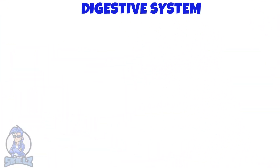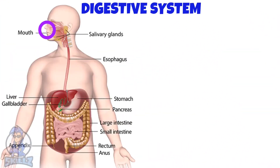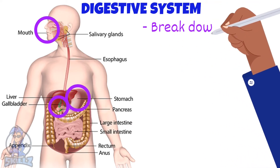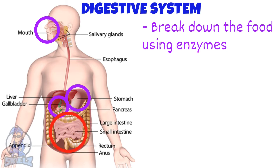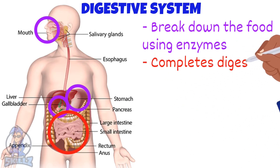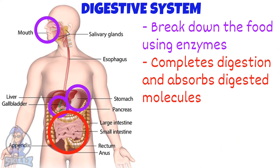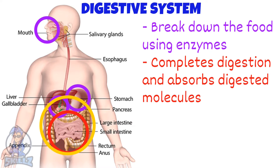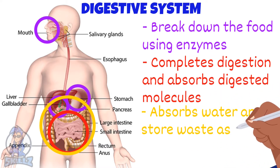Here is the digestive system. The mouth, the stomach, and the duodenum break down the food using enzymes. The ileum completes digestion and absorbs the digested food. The large intestine, the last part of the gut, absorbs water from the remains and stores the waste before being removed from the anus.